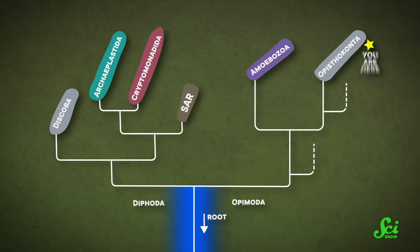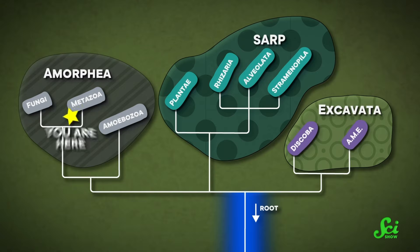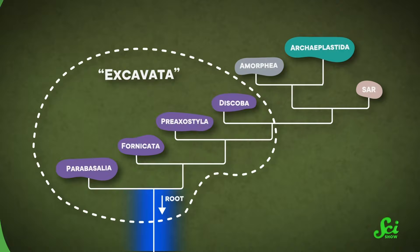That theory was later supported based on DNA from proteins that were given to early eukaryotes by bacteria. In 2014, other researchers used a similar, but different, set of genes to put the root between the Excavates and everything else. They also sorted all the supergroups into mega-groups, because more boxes! It's fun! And in April 2023, a team placed the root smack bang in the middle of Excavata, splitting this supergroup into four and siding with the hypothesis that Excavata isn't a supergroup at all.